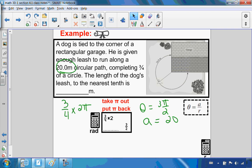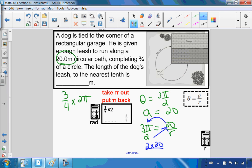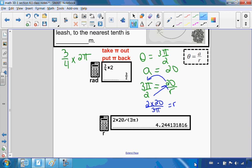I want to use my formula and solve for radius. I have theta, 3π over 2, equals arc length 20 over r for radius. I'm going to cross-multiply and divide. So 2 times 20 divided by 3π will give me my radius. I get 4.2 meters.